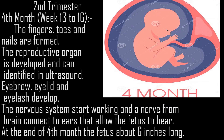Second trimester, fourth month, week 13-16. The fingers, toes, and nails are formed. The reproductive organ is developed and can be identified on ultrasound. Eyebrows, eyelids, and eyelashes develop. The nervous system starts working and a nerve from the brain connects to the ears, allowing the fetus to hear. At the end of the fourth month, the fetus is about 6 inches long.